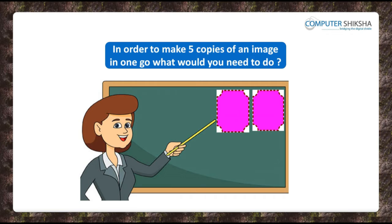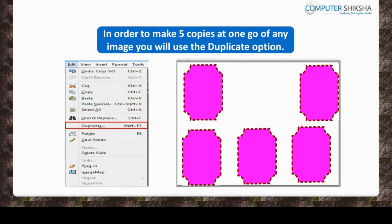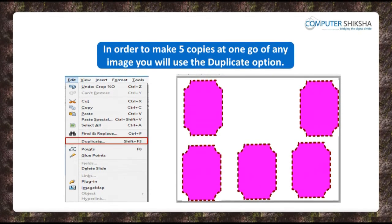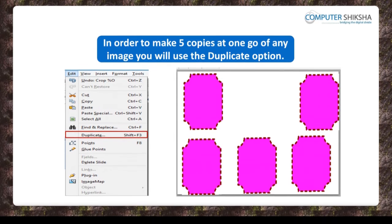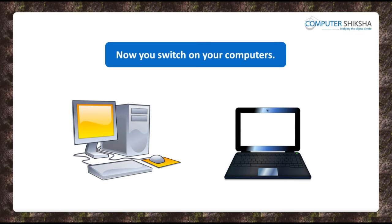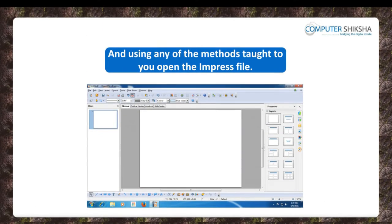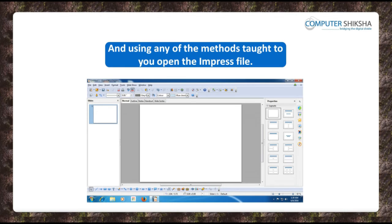In order to make five copies of an image in one go, what would you need to do? To make five copies at once of any image, you will use the Duplicate option. Now, all of you switch on your computers and using any method already taught to you, open the Impress file.